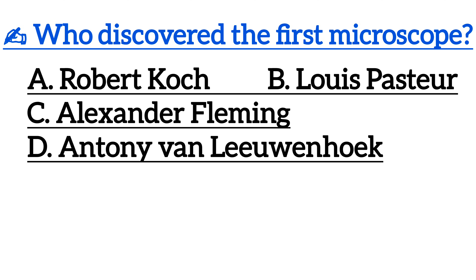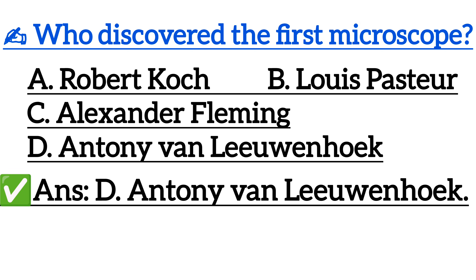Next one is: Who discovered the first microscope? Option A: Robert Hooke, Option B: Louis Pasteur, Option C: Alexander Fleming, Option D: Antony Van Leeuwenhoek. Correct answer is Option D: Antony Van Leeuwenhoek.